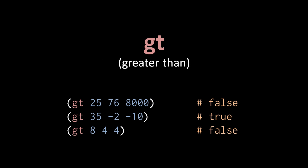And then, as you might imagine, we have the reverse of less than. We have greater than, which returns true when its operands decrease in value from left to right.